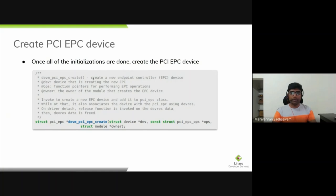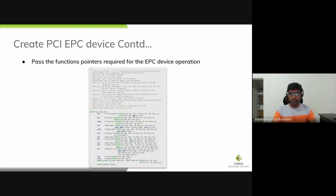The final stage is to register the endpoint controller driver in the endpoint framework using the PCI EPC create API. With this API, the driver passes a PCI EPC ops structure with function pointers defined by the framework. These function pointers are used at runtime: the write header pointer writes to the PCI configuration space; set bar and clear bar configure BAR regions; there are callbacks for setting and getting MSI counts; and function pointers for starting and stopping the controller device.